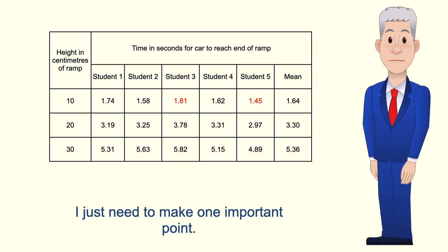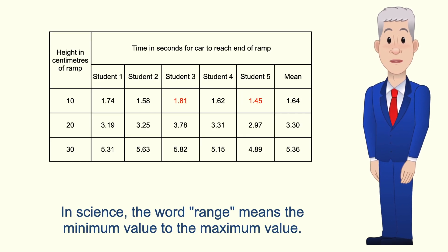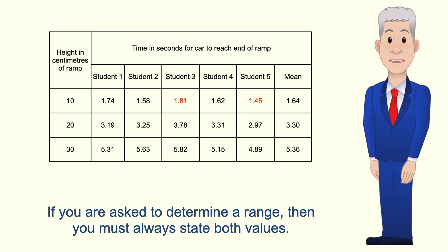Now I just need to make one important point. In science the word range means the minimum value to the maximum value. And if you're asked to determine a range then you must always state both values.